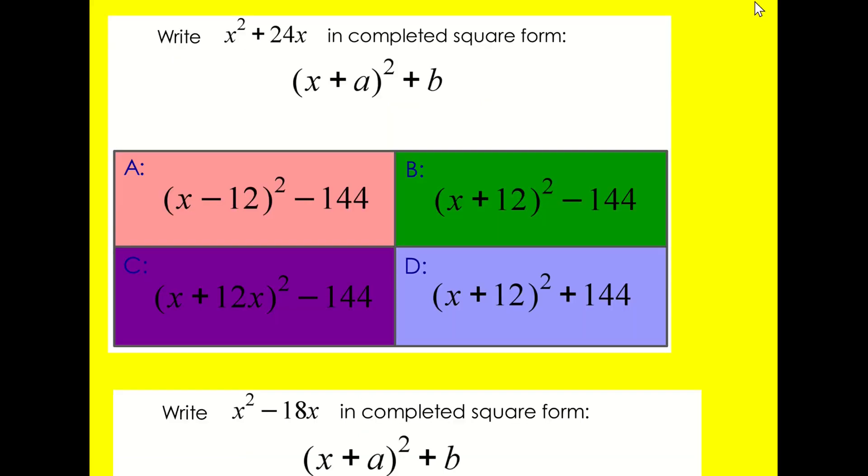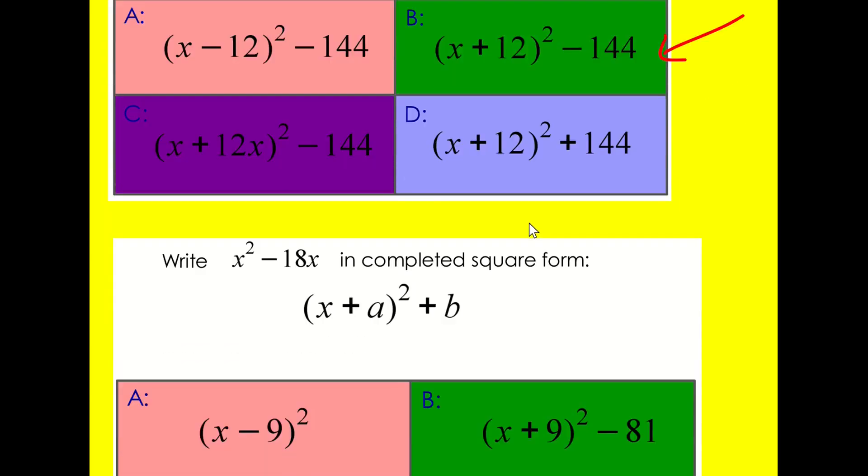Before we move on, I've got a quick little test for you then. Can you write x squared plus 24x in completed square form? This form here. Try and do it without the diagrams now, just by using the method that we've been covering. So, this would be how I'd write it, you know, you might have gone straight to the answer, but I would put it in a bracket. I'd make it 12, because I've halved the 24, and I need to minus 12 squared. And that's going to give me this one here, b.